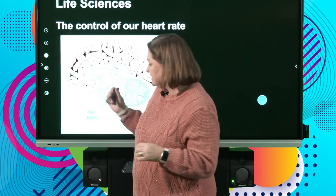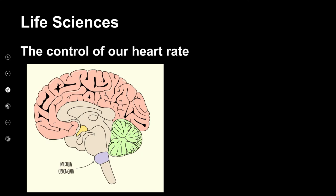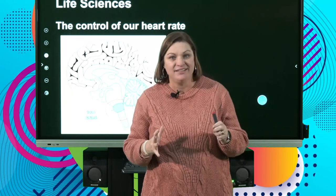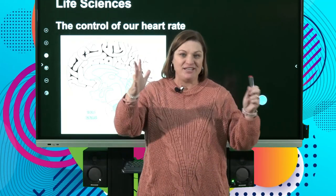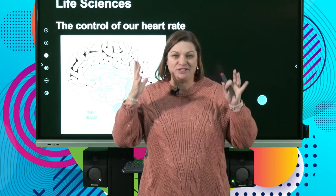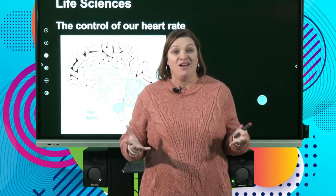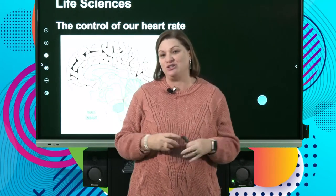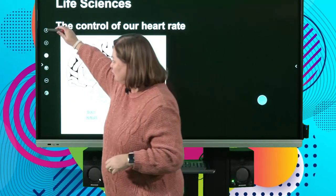Right here in our medulla oblongata, right in our brain stem, that's going to say to us: 'You need to beat faster or you need to beat slower.' It's like after I've run and I need to get all the oxygen around — it's going to tell my heart what to do.